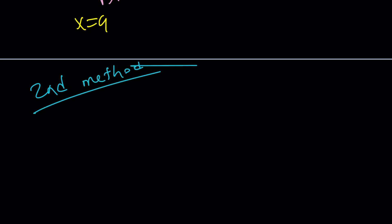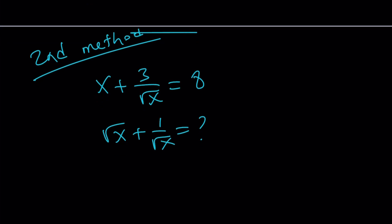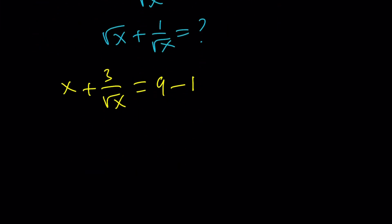Let's talk about the second method because second method is so much fun. For the second method, let me rewrite the problem: x plus 3 over square root of x is equal to 8. Here's what I'm going to do: I'm going to write the 8 as 9 minus 1. And then take a look at this expression now: x plus 3 over root x is equal to 9 minus 1. I'm going to put these terms together in a nice way so that I can factor it.